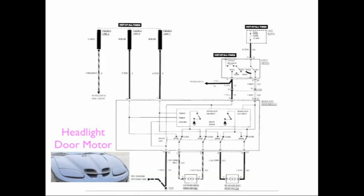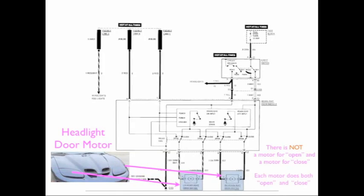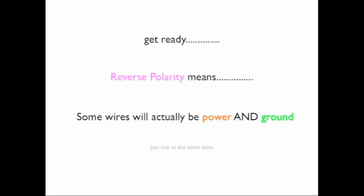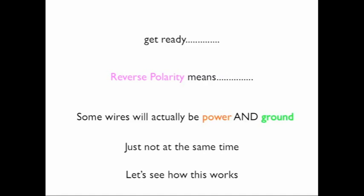We have a headlight door motor and we have two headlights, so we actually have two motors. There is not a motor for open and a separate motor for close — one motor opens and closes, and the other one opens and closes. So this must be reverse polarity, which means some of the wires will actually be power and ground, just not at the same time.